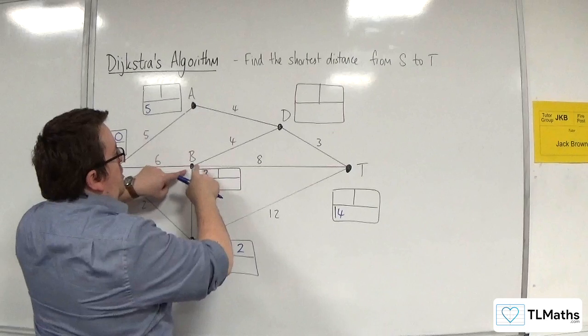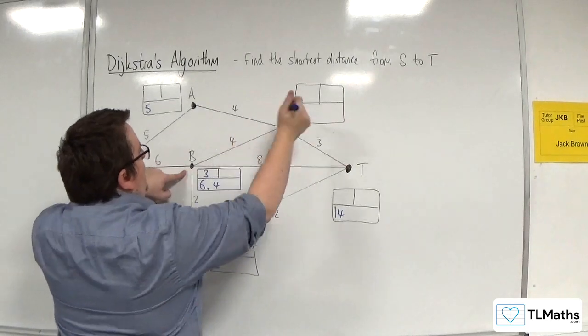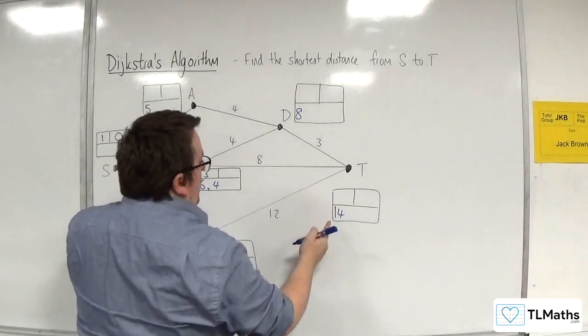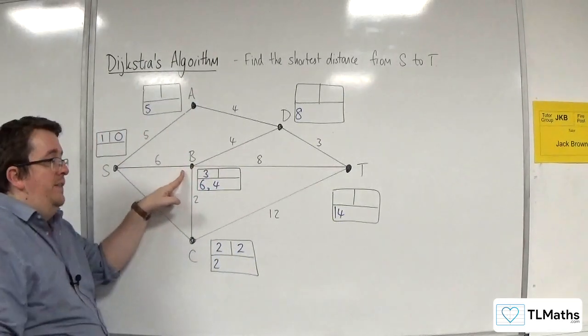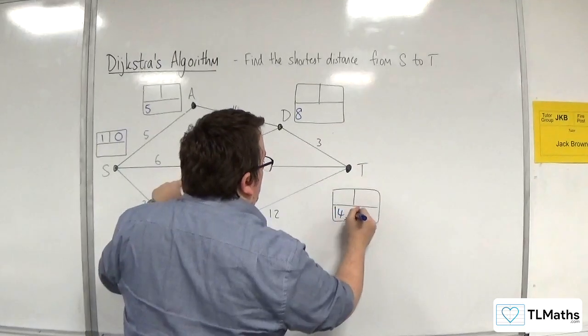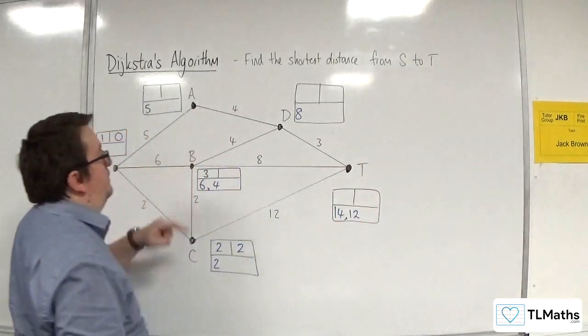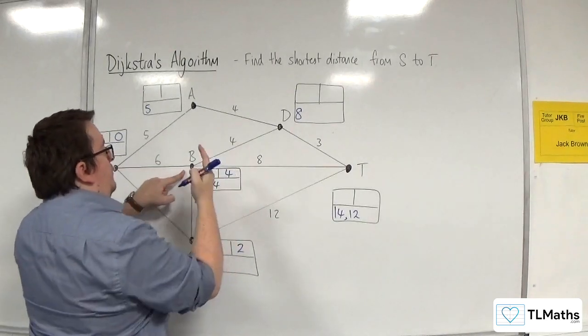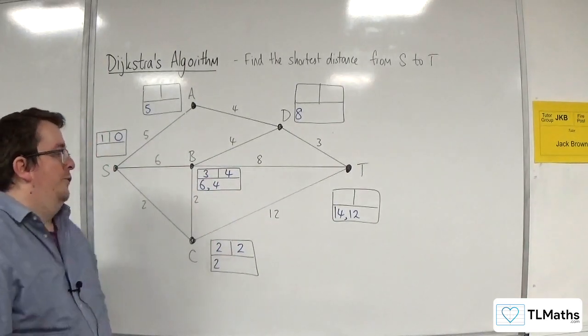So we've got four plus four would be eight, so eight goes into the working value for D. And we've got four plus eight is 12, which is better than the 14 that's there. So we're going to put comma 12 in there. So I've exhausted all the routes out. So final working value for B is four.